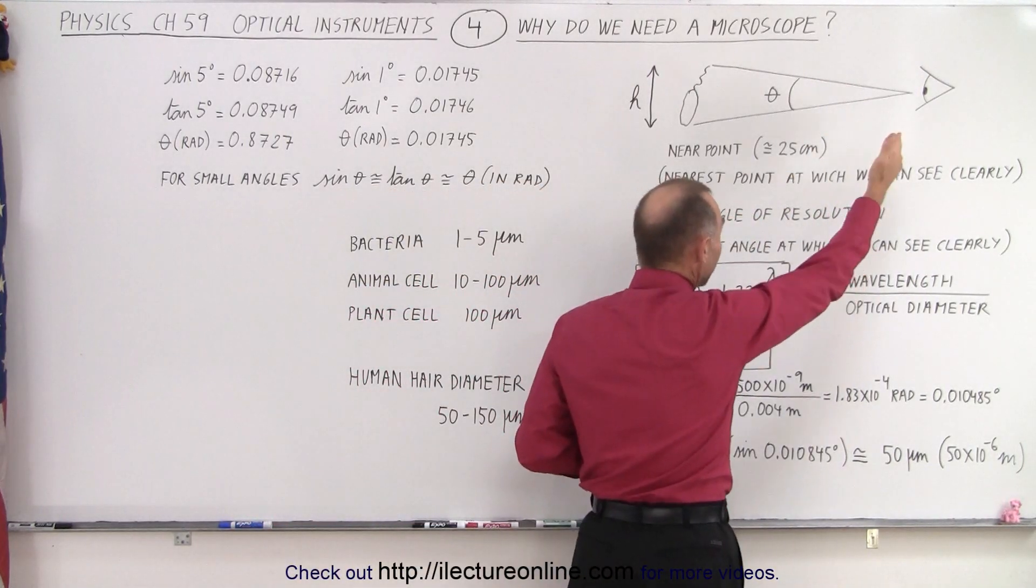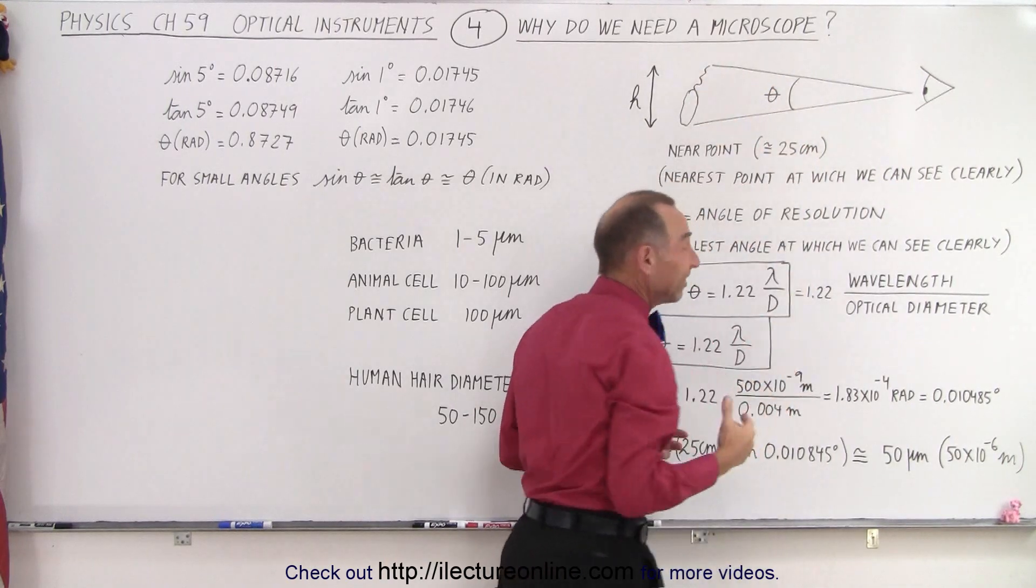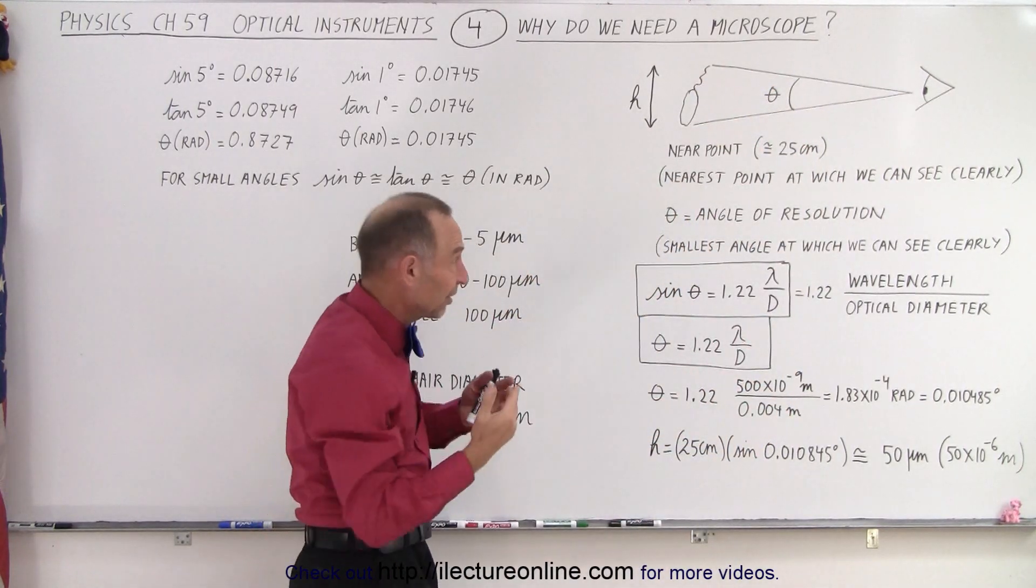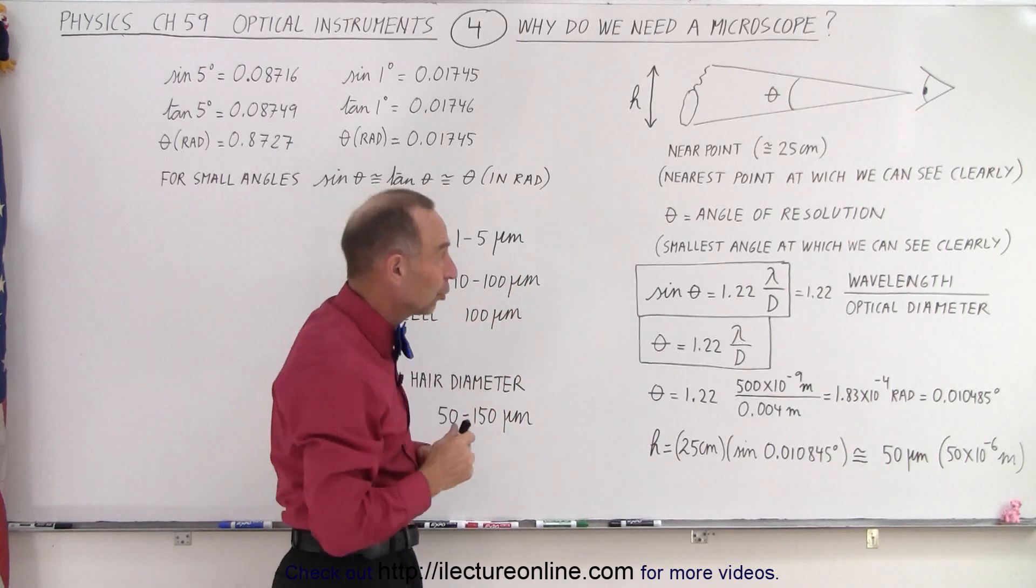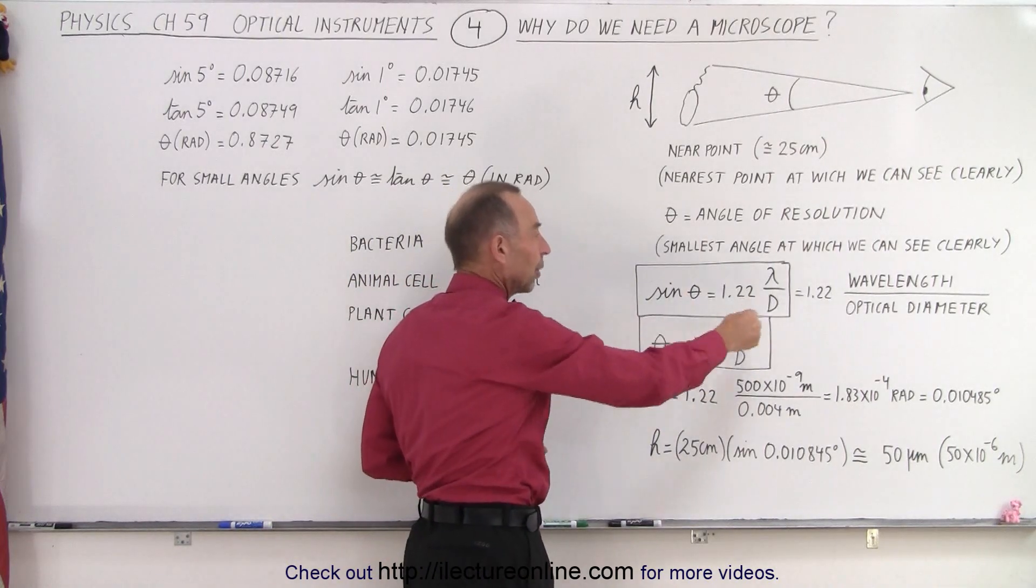Now the better our eyes are, the smaller the angle can become and we can still see the thing clearly. So obviously we're trying to get the smallest possible angle of resolution to see clearly. And we can calculate what that angle is using this equation right here.